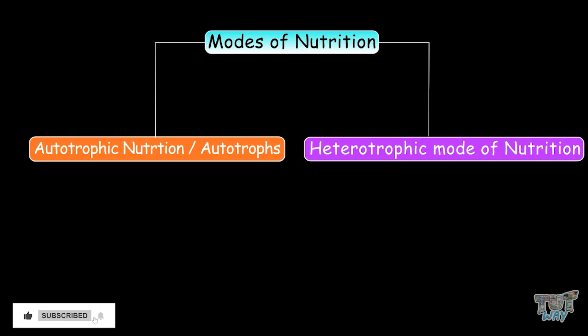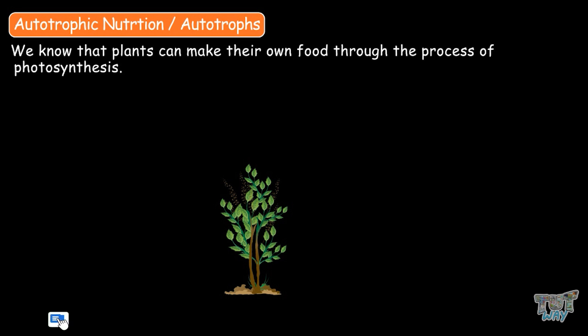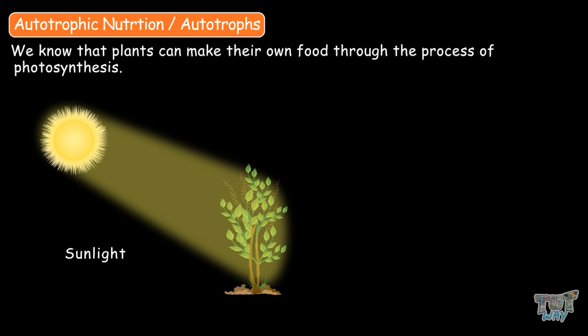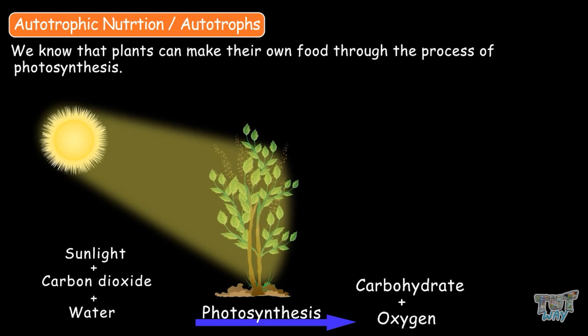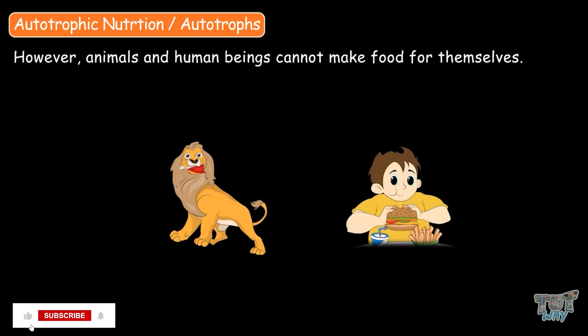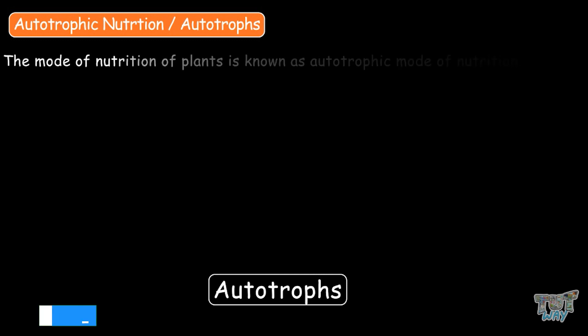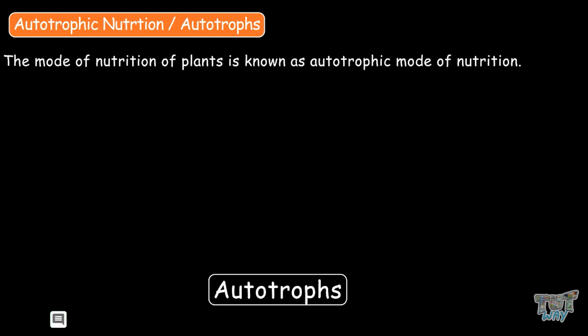We will first learn about autotrophs and autotrophic mode of nutrition. We know that plants can make their own food through the process of photosynthesis. In this process, plants prepare their own food with the help of carbon dioxide and water, in the presence of sunlight and chlorophyll. Oxygen is released as a by-product. Animals and human beings cannot make food for themselves, and this is why all green plants are called autotrophs. And the mode of nutrition of plants is known as autotrophic mode of nutrition.